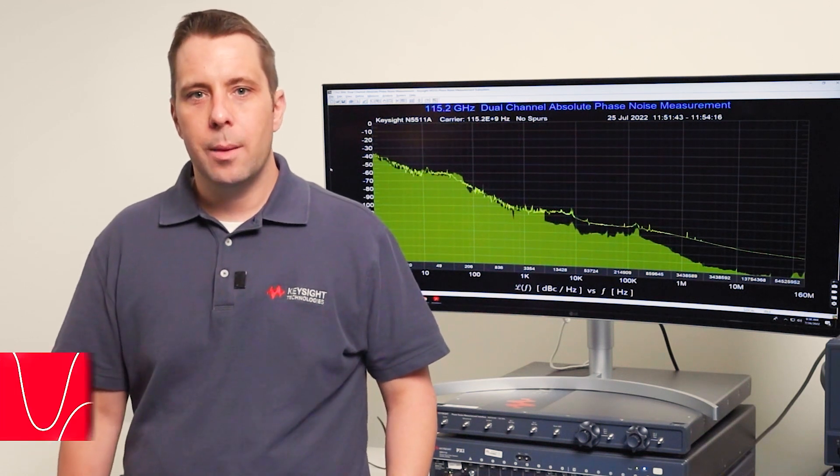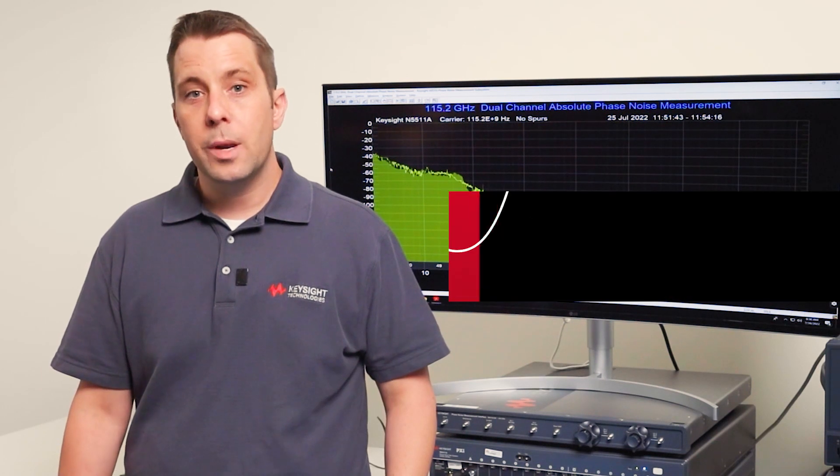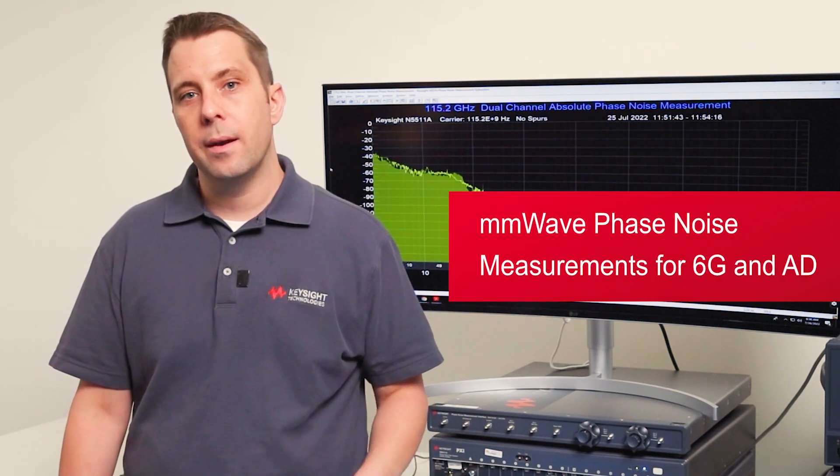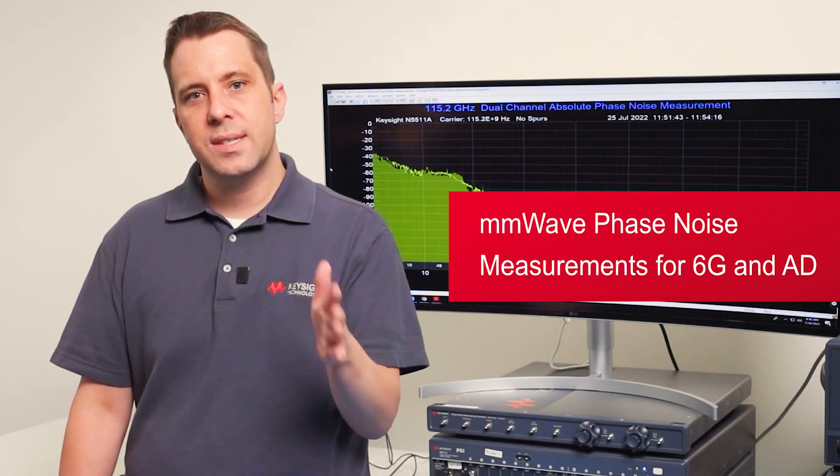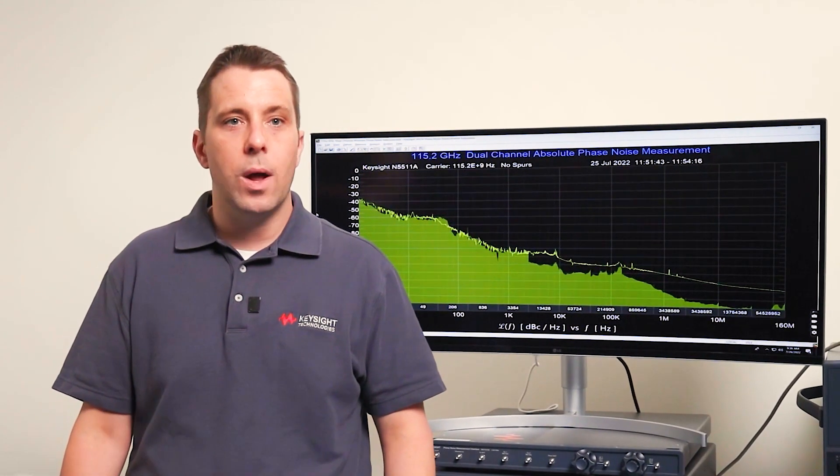Hey everybody, I'm Brooks Hanley and I'm an application engineer here at Keysight Technologies. Today we're going to be looking at millimeter wave phase noise measurements at D-band. D-band is from 110 gigahertz to 170 gigahertz and has applications in aerospace and defense as well as in emerging 6G wireless research.